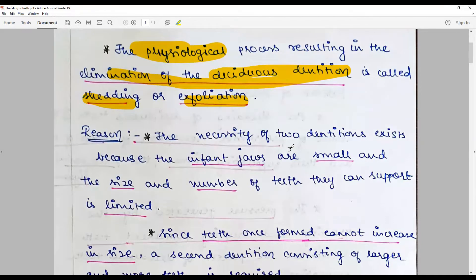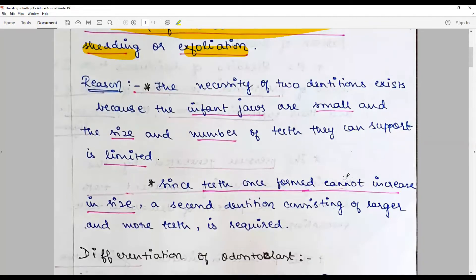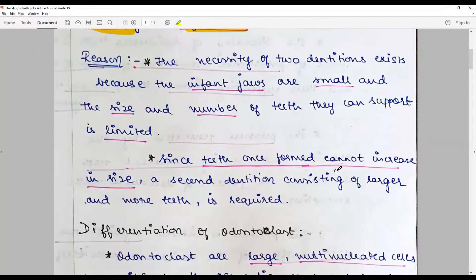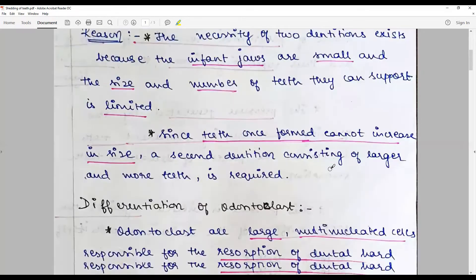Also, the dietary pattern changes widely after adulthood. Since teeth that are once formed cannot increase in size, a new dentition consisting of larger, more firm and stable teeth is required. Hence evolution has placed us with two sets of dentitions.